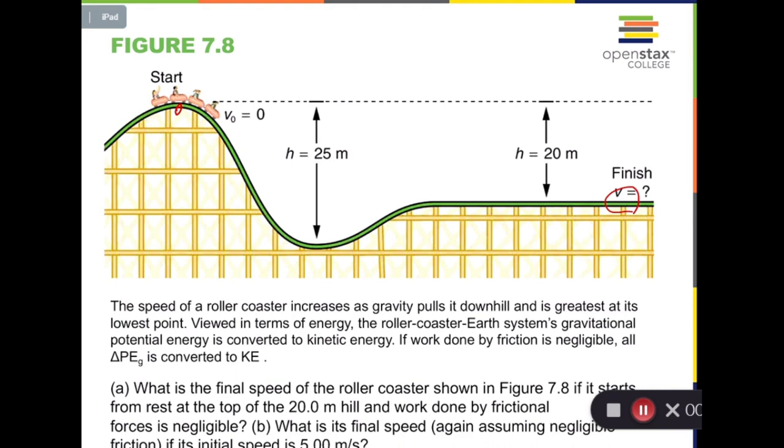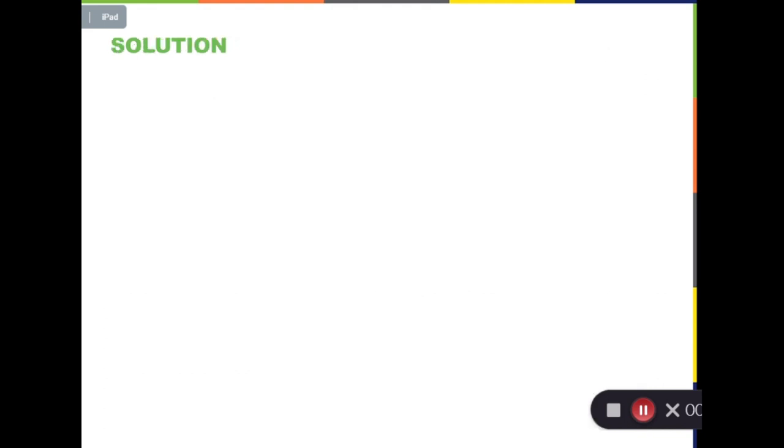Now to be simple, let's ignore the frictional force between the track and the cart. And this is also very important. So question A is asking what is the final speed of the roller coaster if it starts from rest at the top of the 20.0 meter hill and the work done by frictional force is negligible. You can pause this video when you are thinking about the strategy to solve this problem.